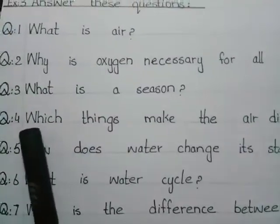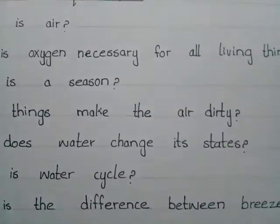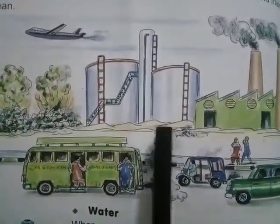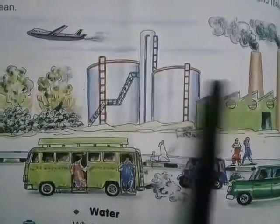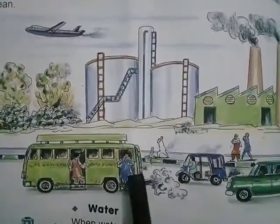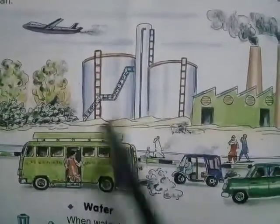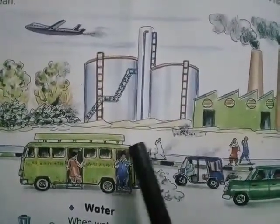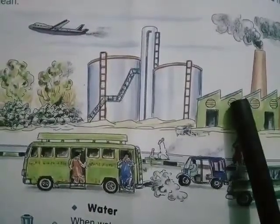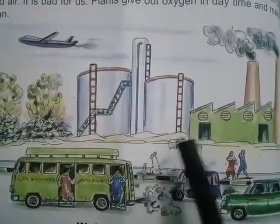Question number 4 is: which things make the air dirty? Air contains dust, smoke, germs, and some harmful gases given out by vehicles and factories. These things make the air dirty. Dirty air is also called polluted air, and polluted air is bad for us.